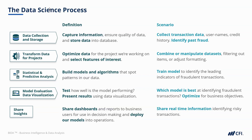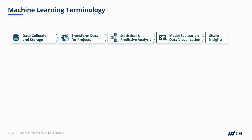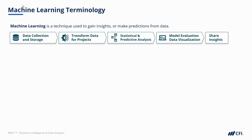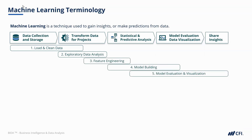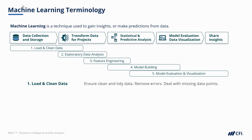Now let's look at the five steps in the context of machine learning specifically. Machine learning is a technique used to gain insights or make predictions from data using coding. Although it follows the same five steps, there are specific terms used in the machine learning world: loading and cleaning data, exploratory data analysis, feature engineering, model building, and model evaluation and visualization. Loading and cleaning data ensures our data is clean and tidy — removing errors or anomalies, dealing with them consistently, and handling missing data points. Exploratory data analysis helps us understand what we can learn at a glance, exploring data types and obvious relationships in our data.